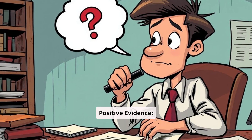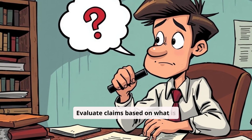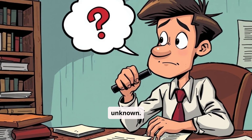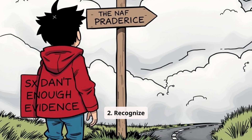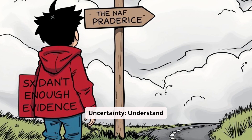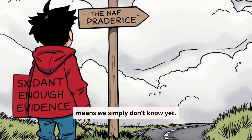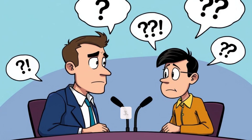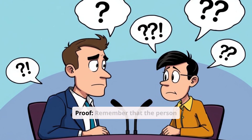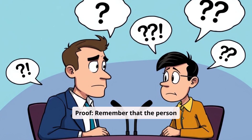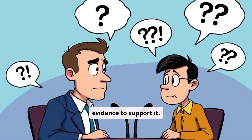How to avoid argument from ignorance: 1. Demand positive evidence — evaluate claims based on what is known, not what is unknown. 2. Recognize uncertainty — understand that a lack of evidence often means we simply don't know yet. 3. Shift the burden of proof — remember that the person making the claim must provide evidence to support it.